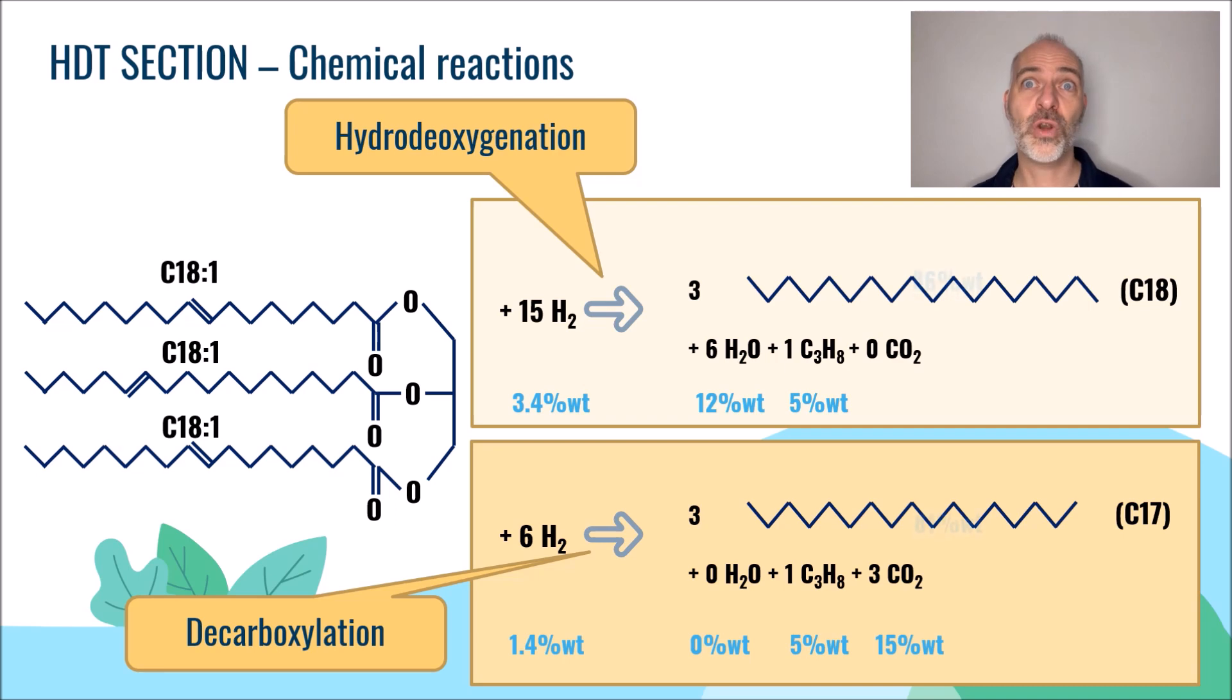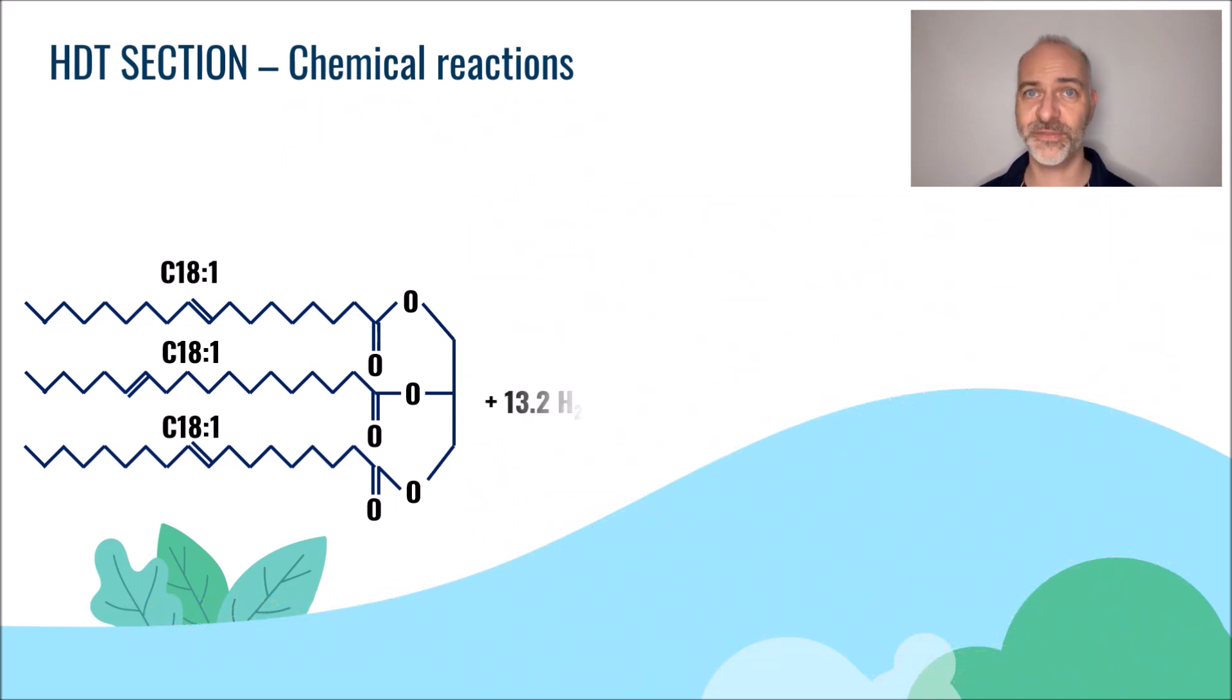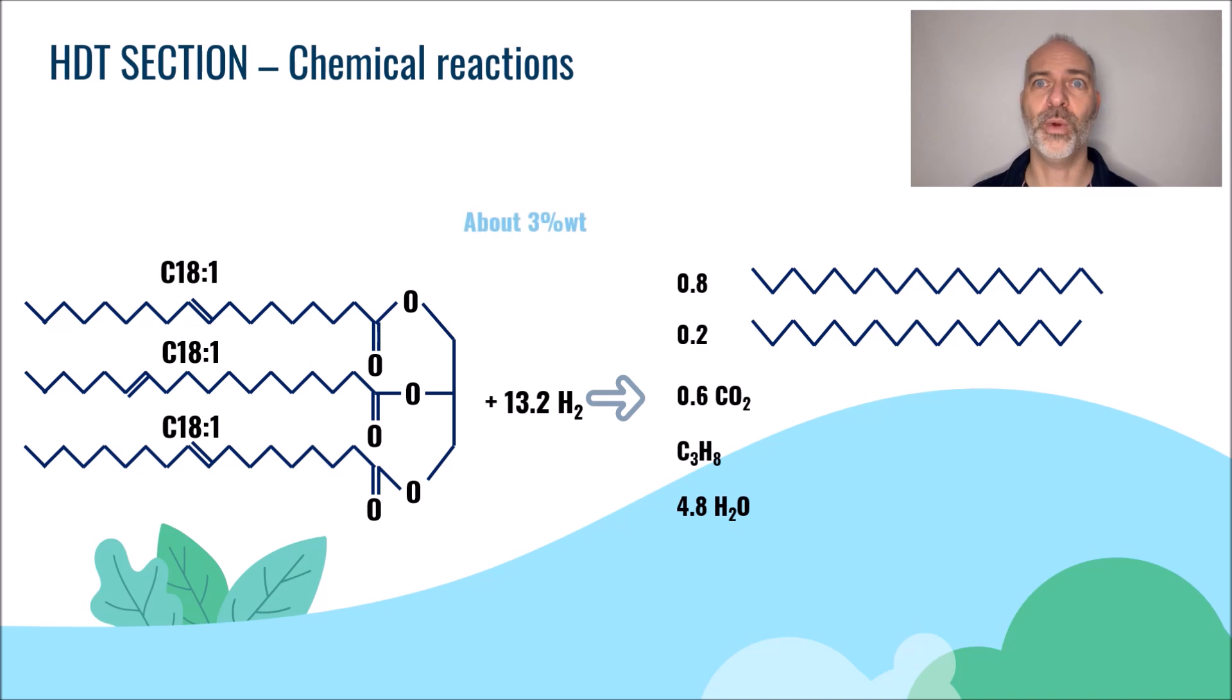The average global reaction that will occur in the reactor is therefore a mixture of these two reactions. We will therefore have global chemical reactions that can be written in this form, with a global hydrogen consumption of about 3 weight percent, a water production of about 10 weight percent, a CO2 production of about 5 weight percent, and a production of a mixture of C17 plus C18 for an amount of about 85 weight percent.